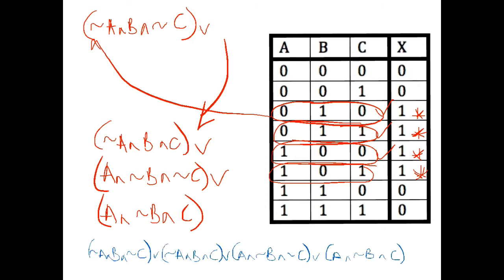I've put that into one line at the bottom of the screen there. Now I look at that expression and I just go, wow, I don't even know where to start simplifying. So personally, I would often stop at just that and say, well, there's my expression and it's huge. So let's have a look at the exact same problem, but we'll go to our expression via a Karnaugh Map.